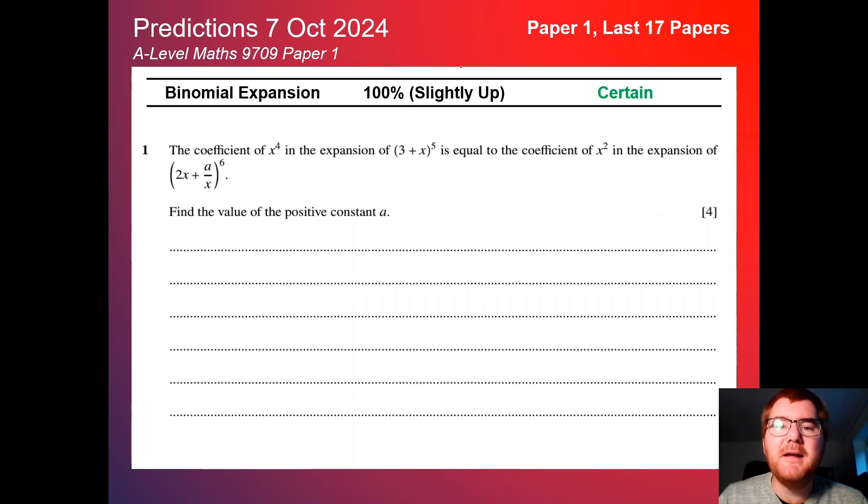On to binomial expansion, exactly 100% here, so certain to appear in some shape or form. This is a very typical question right at the start of the paper, so question 1. Finding those coefficients off those brackets and then sometimes equating them to try and find out what that value is.